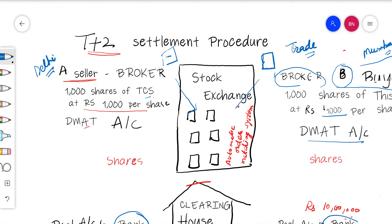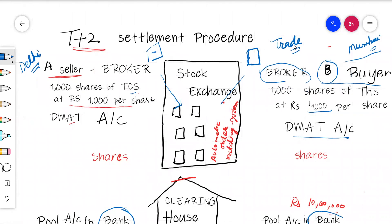The seller's broker connects to the main stock exchange, and similarly the buyer's broker also feeds the order directly to the stock exchange. The stock exchange has an automatic order matching system. The seller wants to sell 1,000 shares and the buyer wants to buy 1,000 shares — the orders match. When the order matches, that is called the trade.